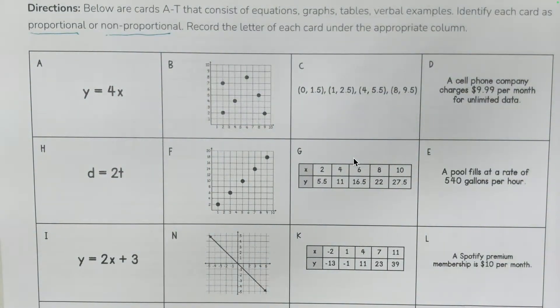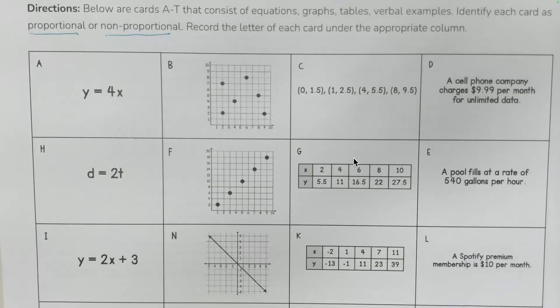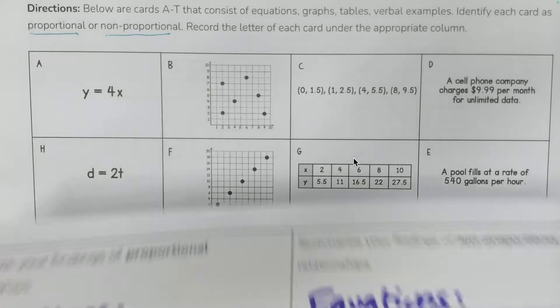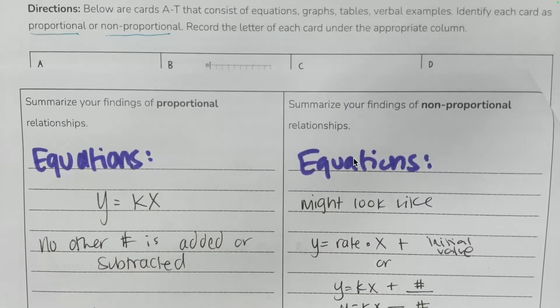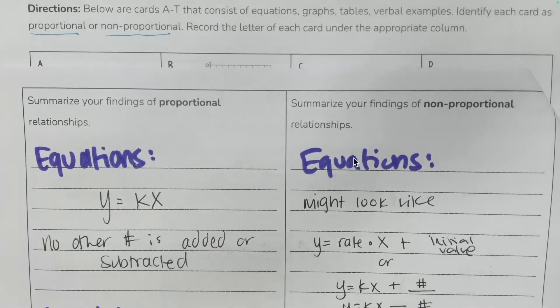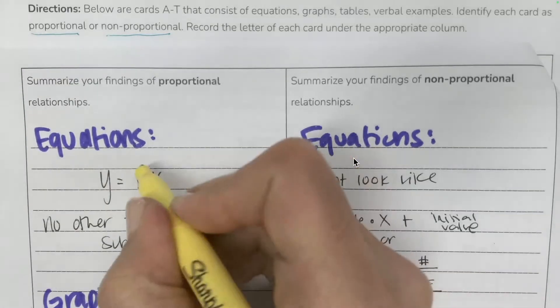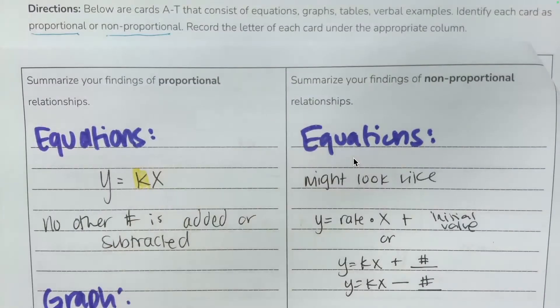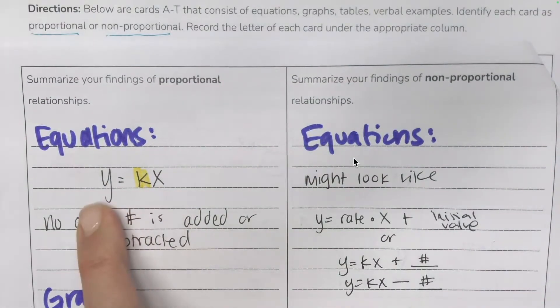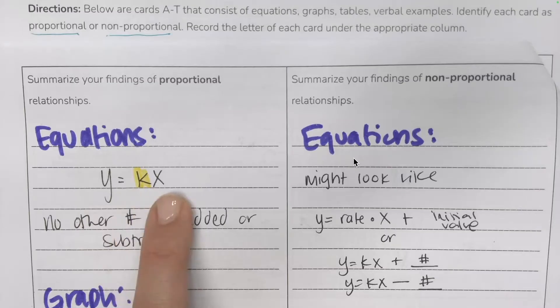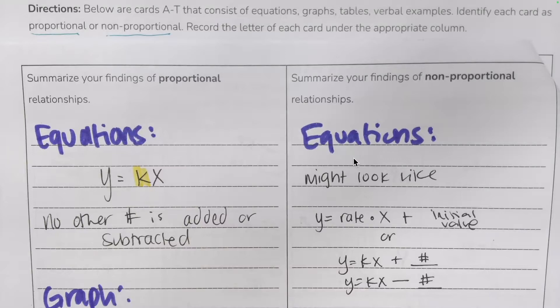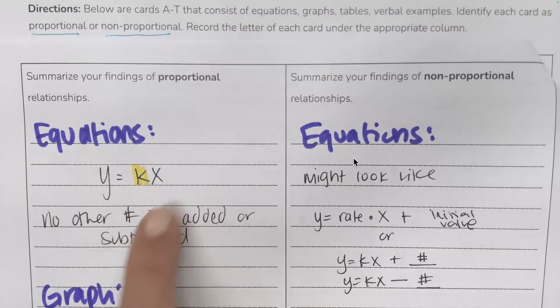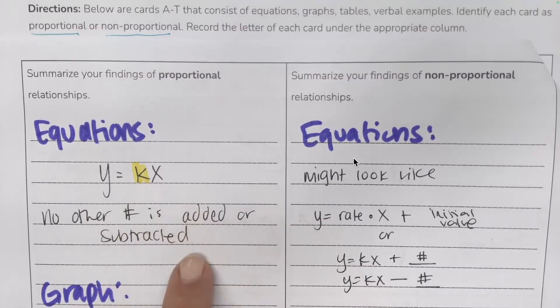Let's take a look at the equations first. So the general form of a proportional equation is y equals kx, where k is the constant of proportionality. So we want to look at equations that are in this form, a variable equals some constant times the variable x, or another variable. They can change it up on you and use different letters like distance and time. We want to make sure that when we're looking at this equation, we don't see any other number that's being added or subtracted.